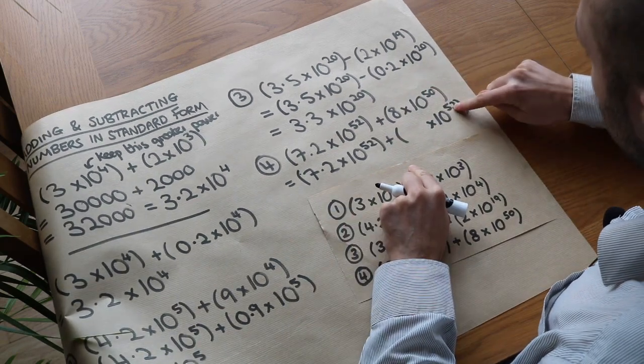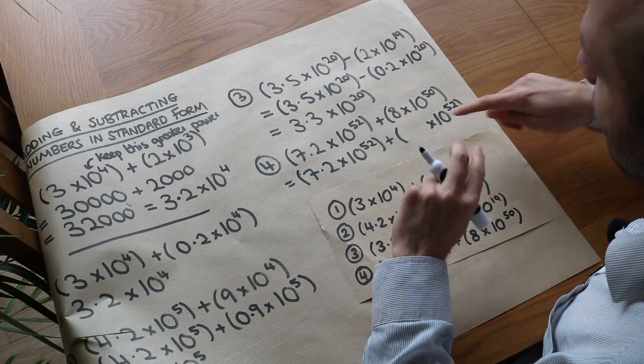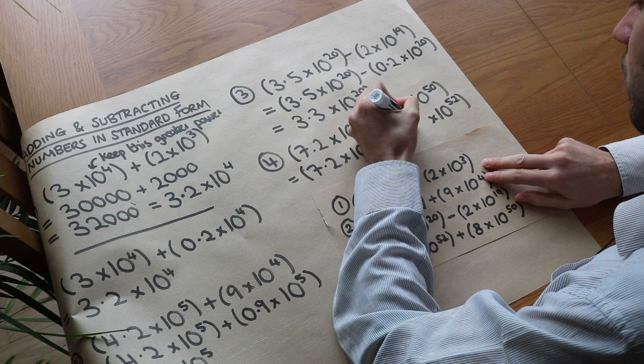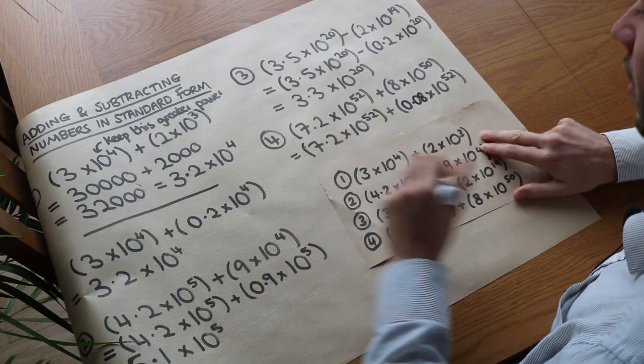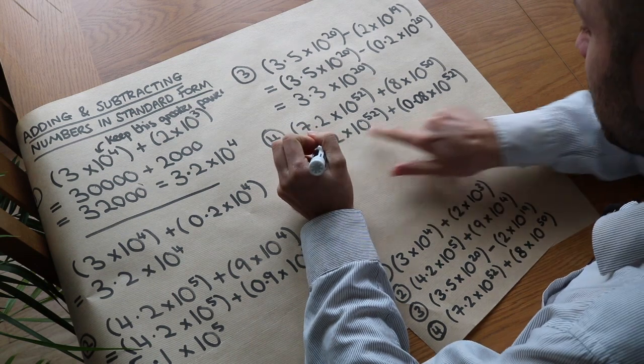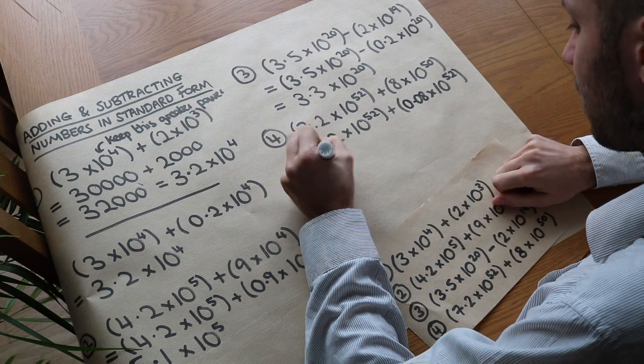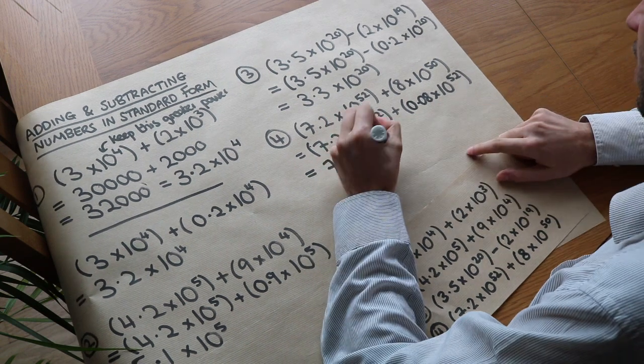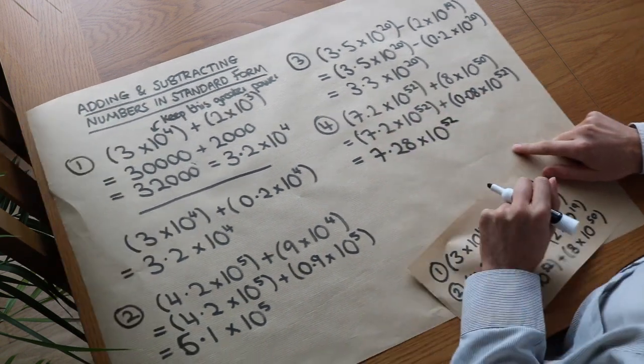Now we increase the power by 2, so we're multiplying by 2 more tens, i.e. we're making it 100 times bigger. So we have to make it 100 times smaller, which will be 0.08. But now these match, so we can just add these. So 7.2 plus 0.08 is going to be 7.28, and it's times 10 to the 52. And that is it.